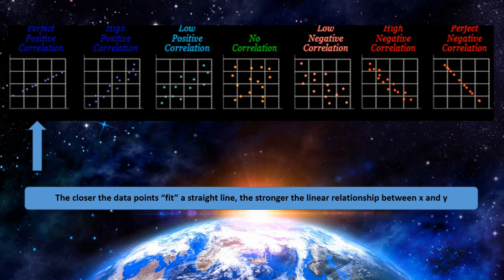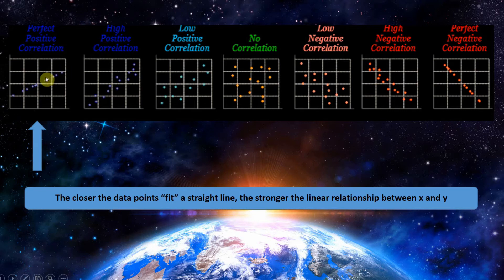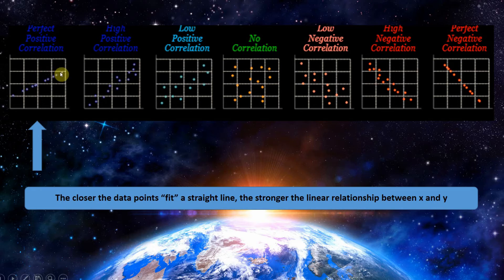In this particular example we are looking at a positive correlation, shown by the fact that as we increase values of X, Y is also increasing. We can also say the correlation is positive because the slope of the line is positive — it starts in the lower left and increases to the upper right. This tells us that r is positive, X and Y both increase together, and it's perfect because all the dots fall on the line.